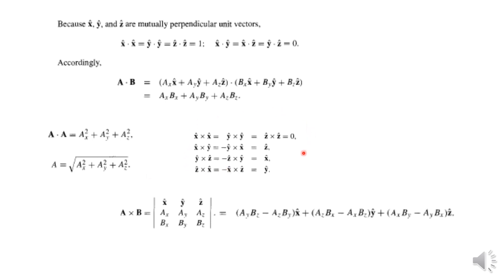Similarly, to find the cross product in component form: x̂ × x̂ involves the magnitude of x̂ times the magnitude of x̂ times sin(θ). The angle between x̂ and itself is 0, so sin(0) = 0. Similarly for ŷ × ŷ and ẑ × ẑ — the result is 0. That is, x̂ × x̂ = ŷ × ŷ = ẑ × ẑ = 0.